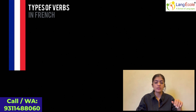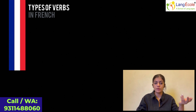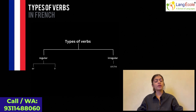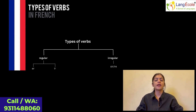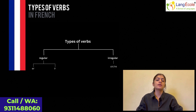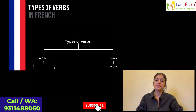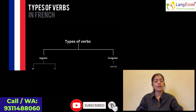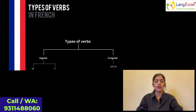We have understood now that in English, we have regular and irregular verbs. Well, the same happens in case of French as well. There are three groups of verbs in French. Two of these groups fall under the category of regular verbs and one group comes under irregular verbs. ER verbs and IR verbs are regular verbs, and verbs that end with -oir and -re mostly fall under the category of irregular verbs.